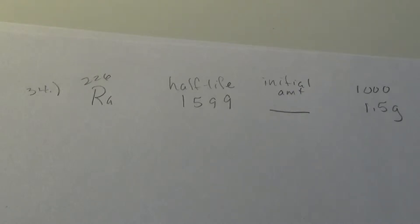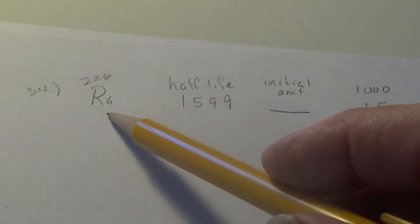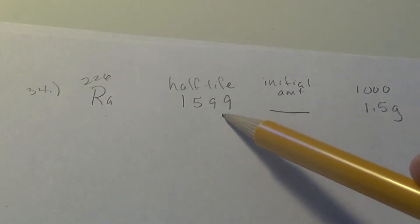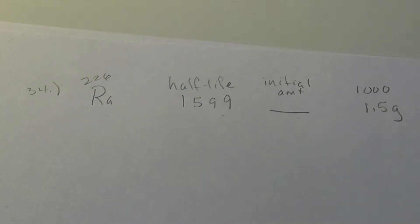So in 34, we were told that radon isotope 226 had a half-life of 1599. We were not told the initial amount, which is a pain. I hate when that happens.